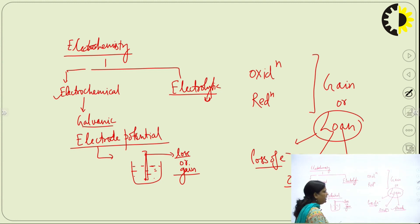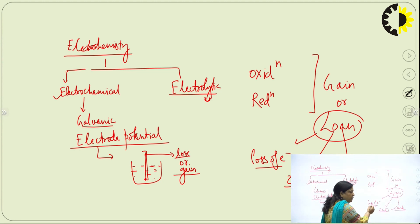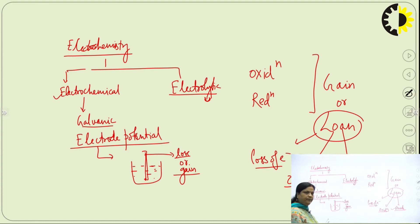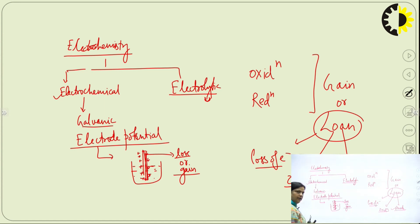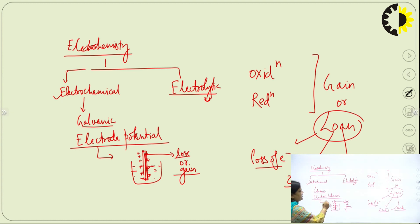Similarly, where there is gain of electrons, it is called reduction, and it occurs at the cathode. When a metal either loses or gains electrons, it will definitely form an opposite charge layer. This opposite charge layer is called the Helmholtz double layer. Because of this Helmholtz double layer, a potential difference is created, and this potential difference is called the electrode potential.